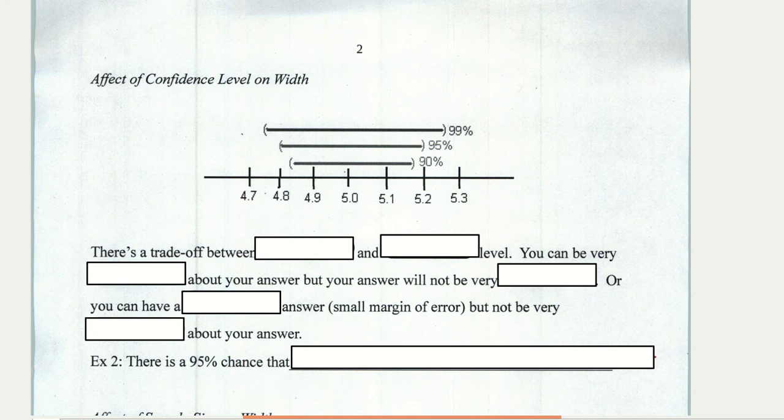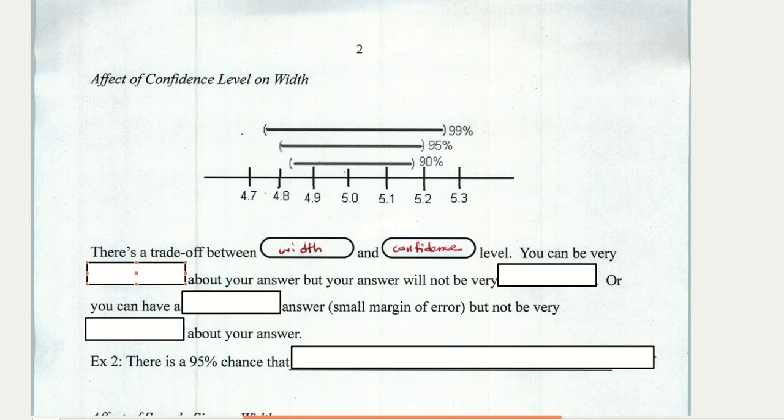Your intuition will tell you that if you want to have more confidence, if you want a larger confidence level, then that confidence interval is going to have to be larger than if you want a smaller confidence level. So for example, a 99% confidence level will give us a confidence interval that's much bigger than a 90% confidence level. At a 90% confidence level, we only have to be 90% sure that our interval captures the true population parameter. So there's a trade-off between the width, how wide that interval is, and the confidence level.